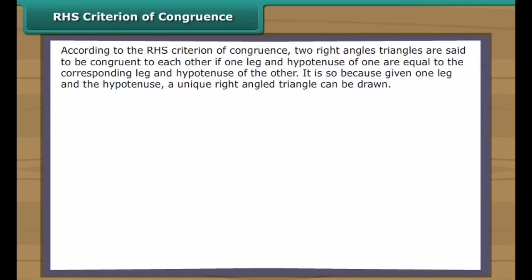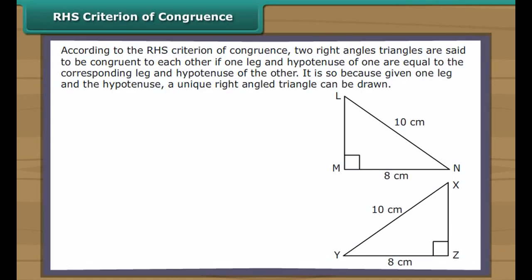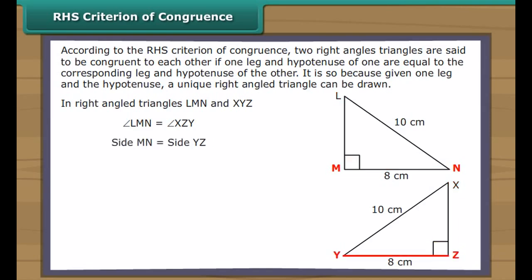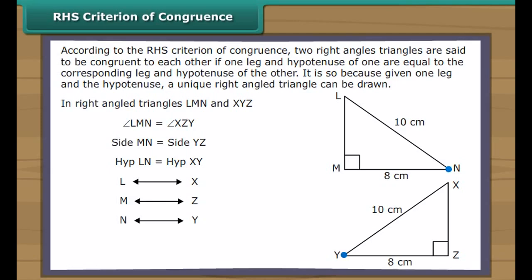RHS criterion of congruence: according to the RHS criterion, two right-angled triangles are said to be congruent to each other if one leg and the hypotenuse of one are equal to the corresponding leg and hypotenuse of the other. This is because given one leg and the hypotenuse, a unique right-angled triangle can be drawn. In right-angled triangles LMN and XYZ: angle M equals angle Y (right angles), side MN equals side YZ, and hypotenuse LN equals hypotenuse XZ. Therefore, triangle LMN is congruent to triangle XYZ.